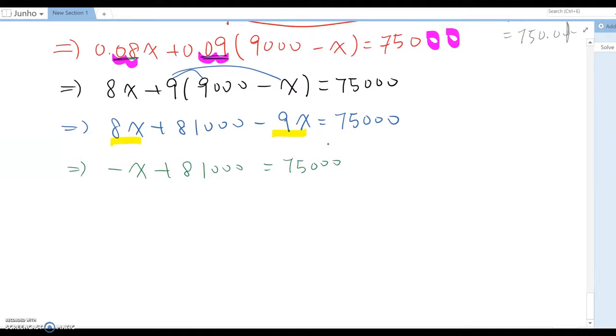So we want to isolate X term alone, so subtract 81,000. Then negative X become negative 6,000.